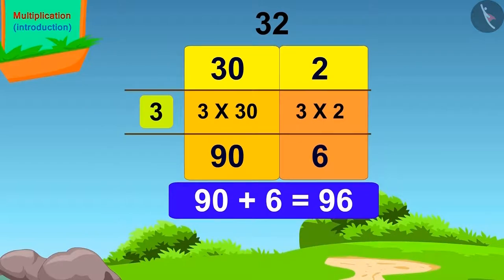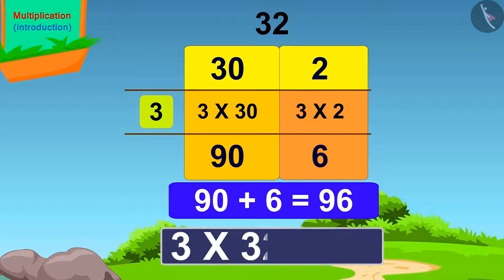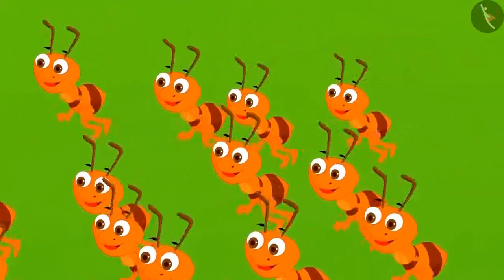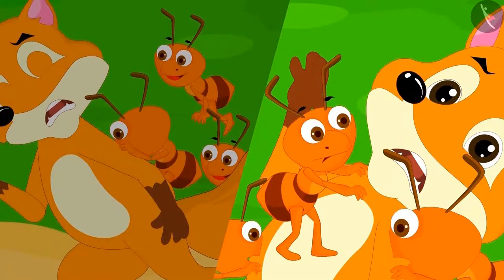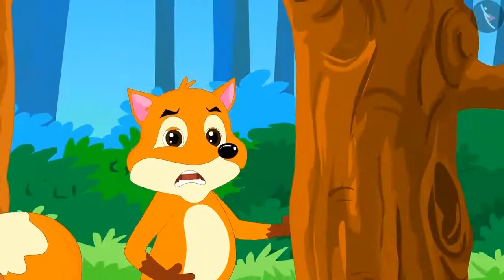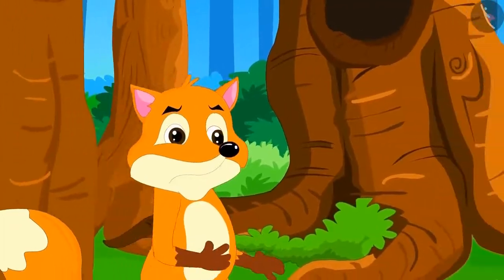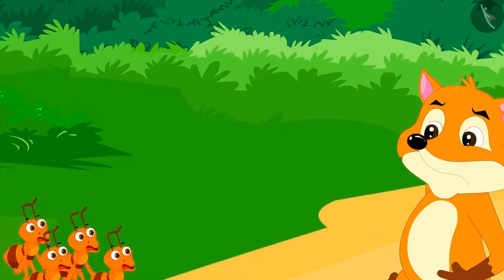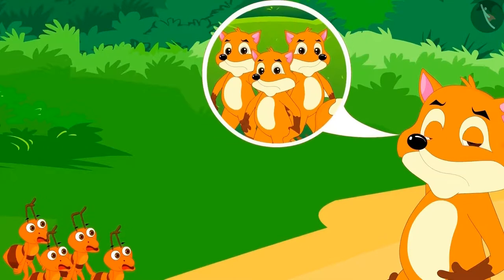Now it's very easy. On adding 6 and 90 we get 96. This way we got our answer: 3 times 32 is 96. There were a total of 96 ants. When the wolf fell asleep, the ants attacked him the whole night — every group bit him severely. The wolf ran away in pain.